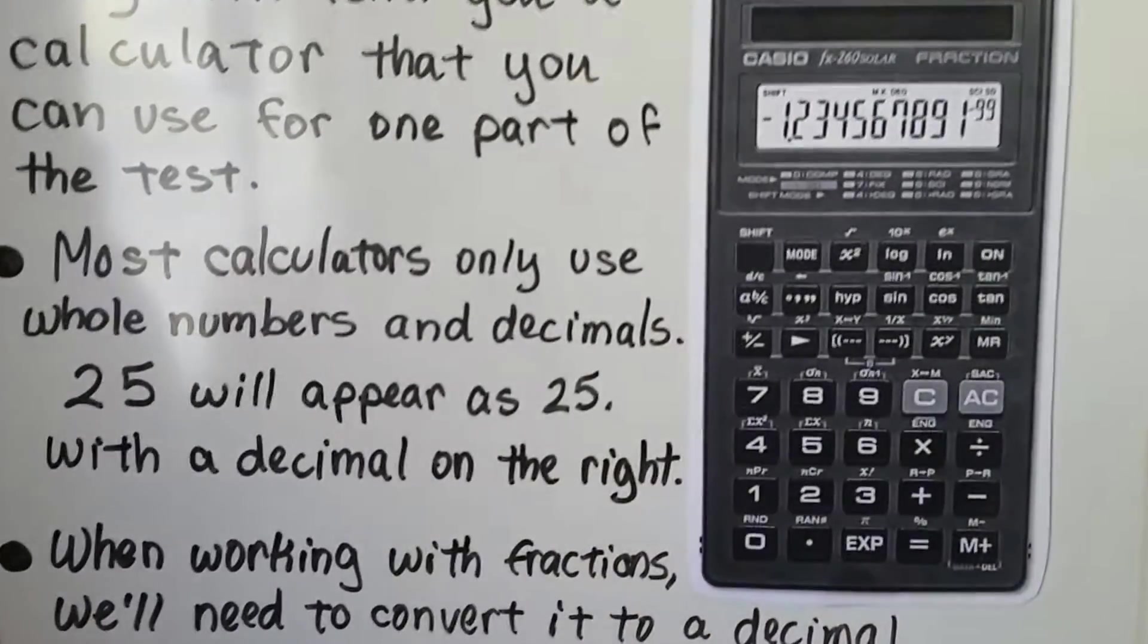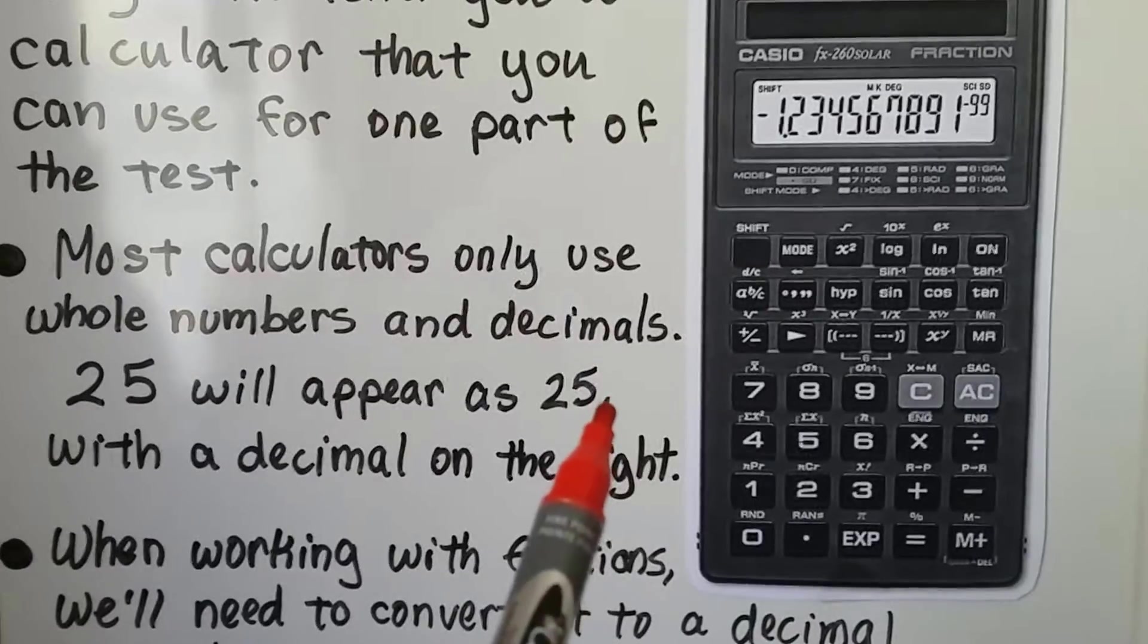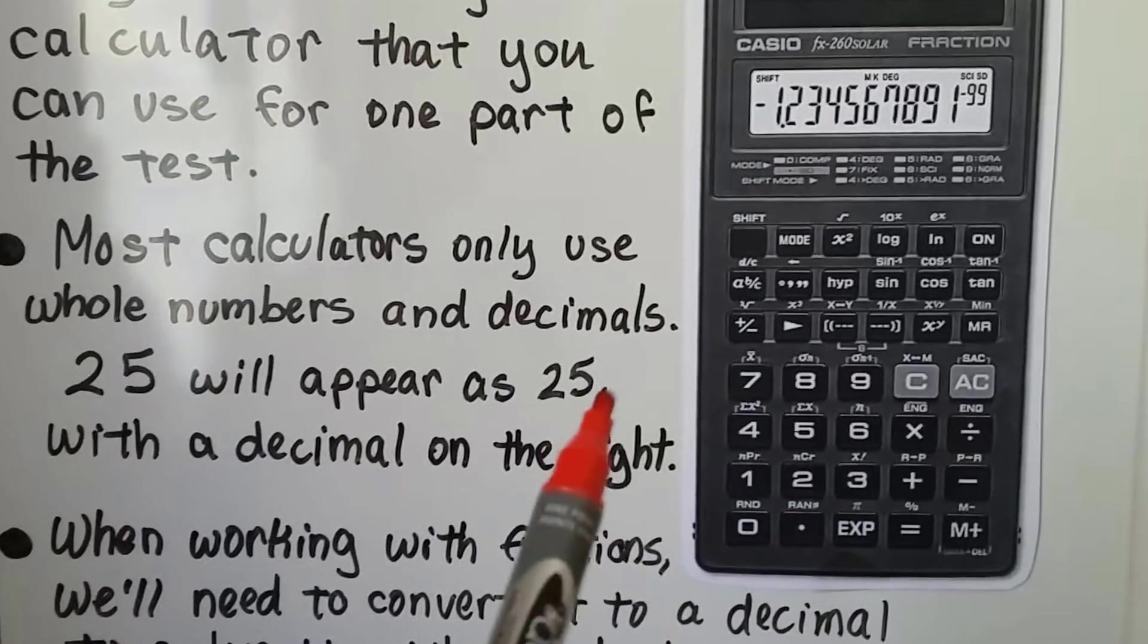If you type in 25, it'll appear as a 25 with a decimal point at the end, even though it's a whole number. It's going to have a decimal point at the right.